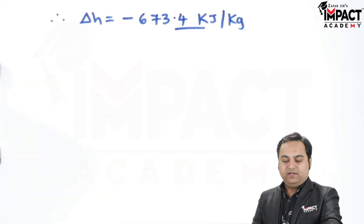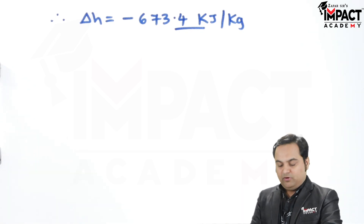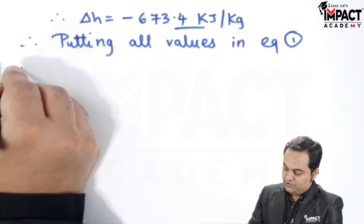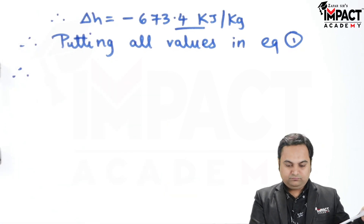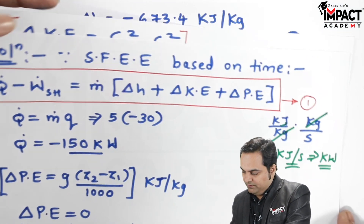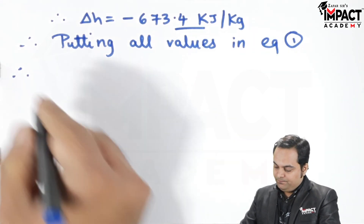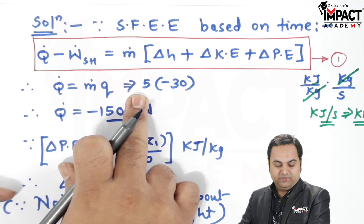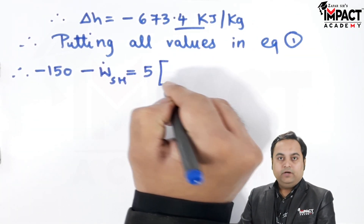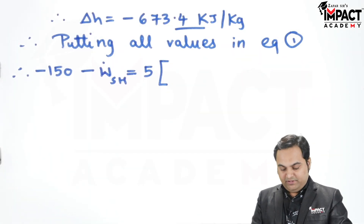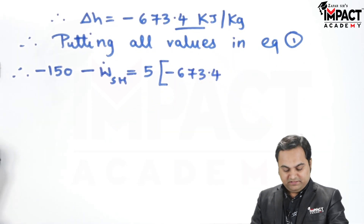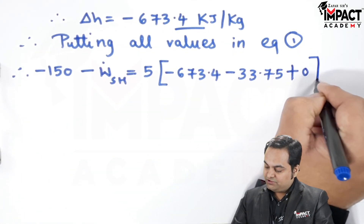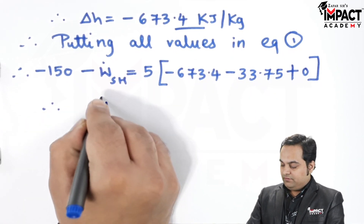Now substituting all values into equation one: Q-dot minus W-dot-sh equals m-dot times (delta H plus delta KE plus delta PE). Putting in the values: minus 150 minus W-dot-sh equals 5 times (minus 673.4 plus minus 33.75 plus 0). Moving minus 150 to the other side gives plus 150 on the right-hand side.